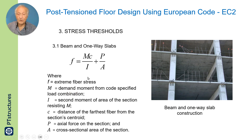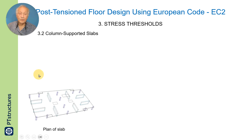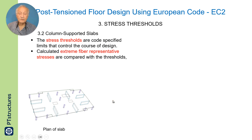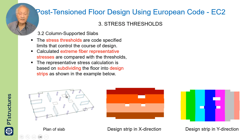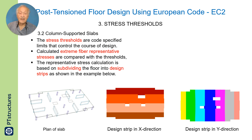For column-supported slabs, the threshold is based on an extreme fiber representative stress. You break the slab into strips in one direction and strips in the other direction — this is described in Appendix I of the code. Each strip is assumed to carry the load that falls on it, and you calculate the bending moment, shear, etc. on each strip.